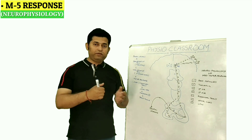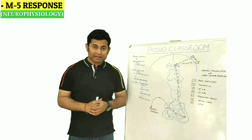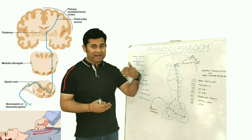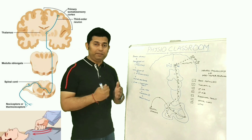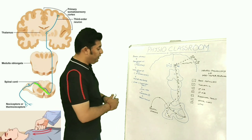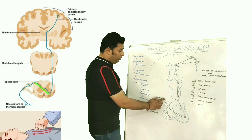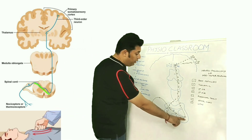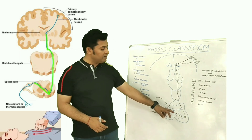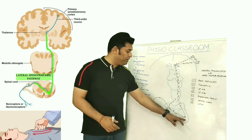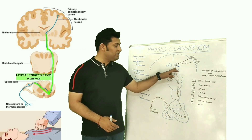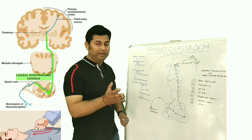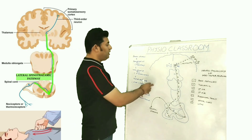The painful stimulus provided by the therapist is carried by the pain pathway on the contralateral side of the spinal cord, where it starts ascending through the lateral spinothalamic tract and then reaches the ventroposterolateral nucleus of the thalamus.